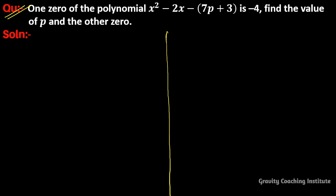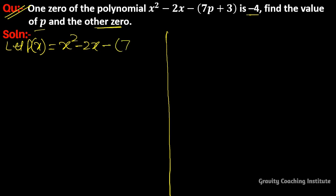Question: one zero of the polynomial x² - 2x - (7p + 3) is -4. Find the value of p and the other zero. First of all, we let p(x) equal to x² - 2x - (7p + 3). According to the question, one of its zeros is -4, so we write p(-4) = 0, and now we replace x by -4.